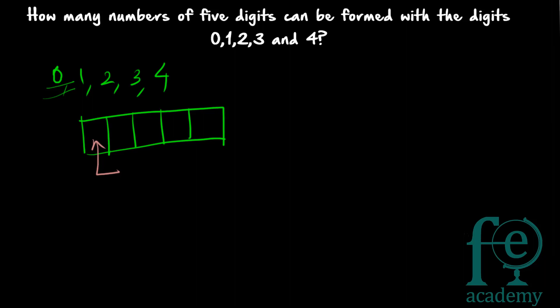So there are two ways of understanding this question. In the first way: the 10,000th place can be filled using 1, 2, 3 or 4 only — so there are 4 ways to fill the 10,000th place. For the 1,000th place, since there is no repetition, one digit is already used, so 4 digits remain and the 1,000th place can be filled in 4 ways.